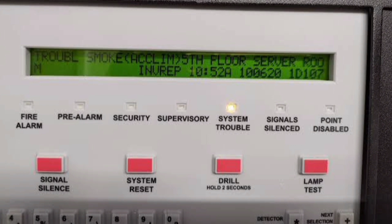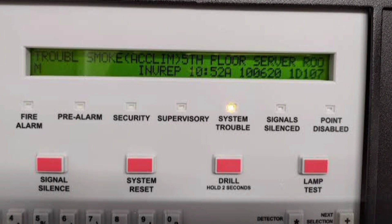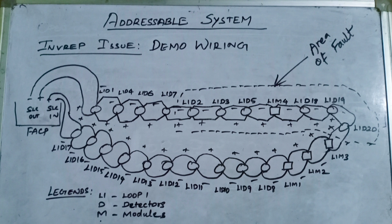Now let's get into troubleshooting of invalid response. When we get troubles on the display of the panel — some of my colleagues pronounce this like 'in-verb' — ha, it's a joke. This is based on my experience from the NFS 320 and FireLight MS-9600 LS panels. Invalid response means there is no communication between the devices and the panel PCB. Because of this lack of communication, the device will disappear from the panel unless you take action.